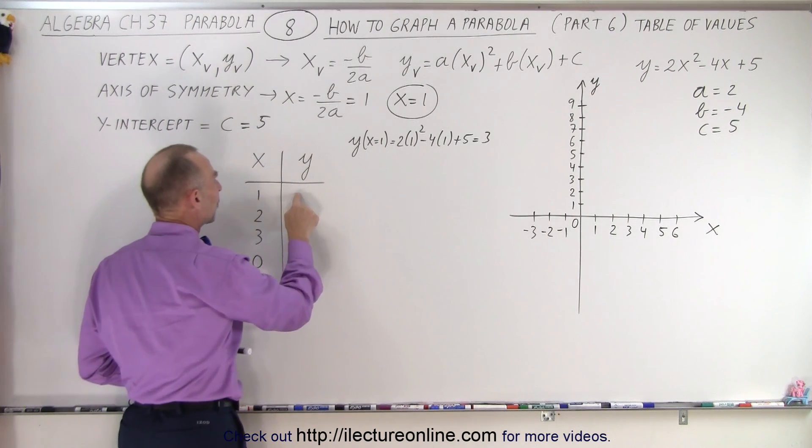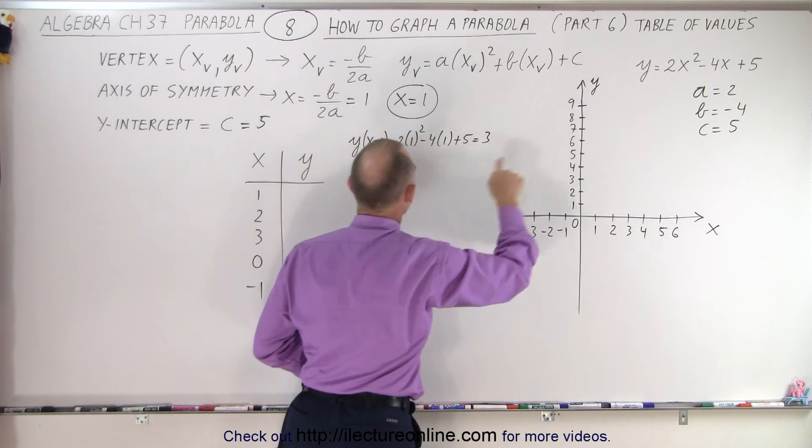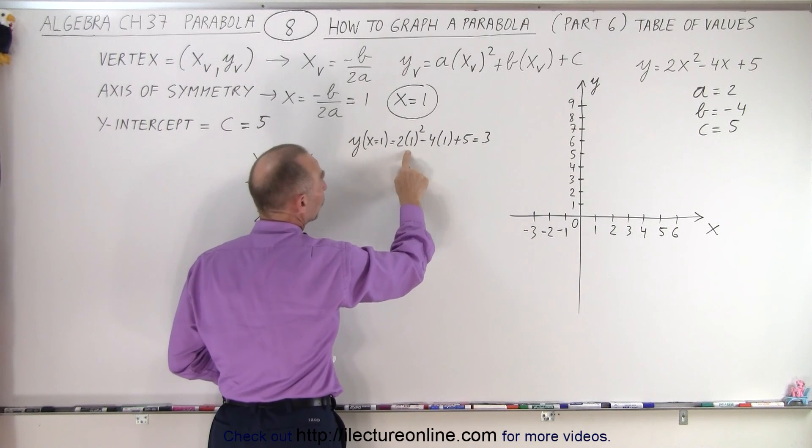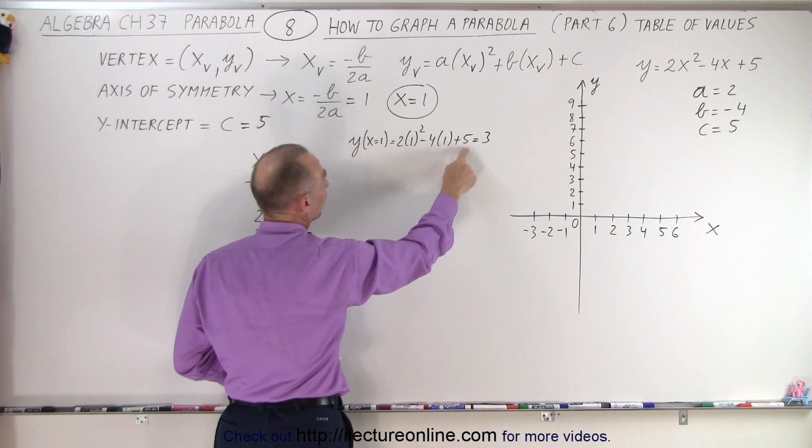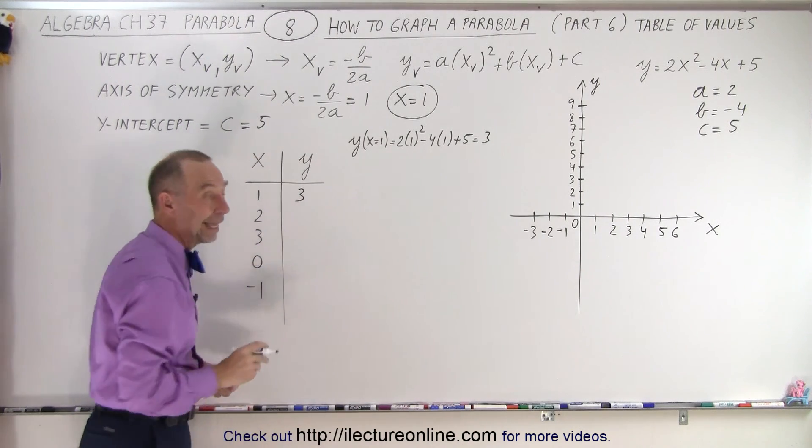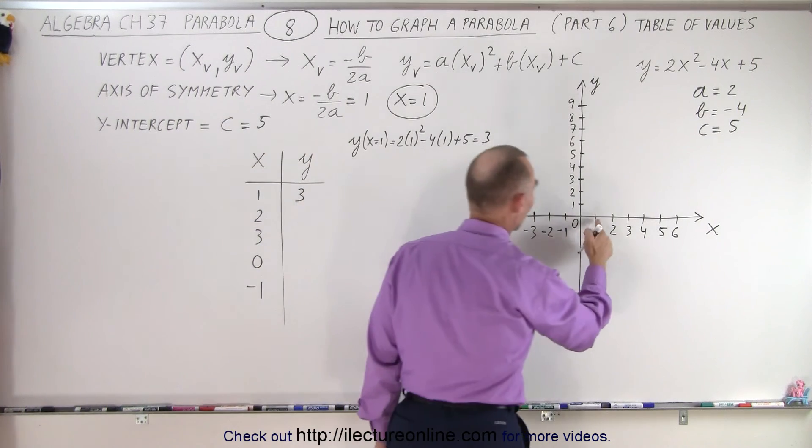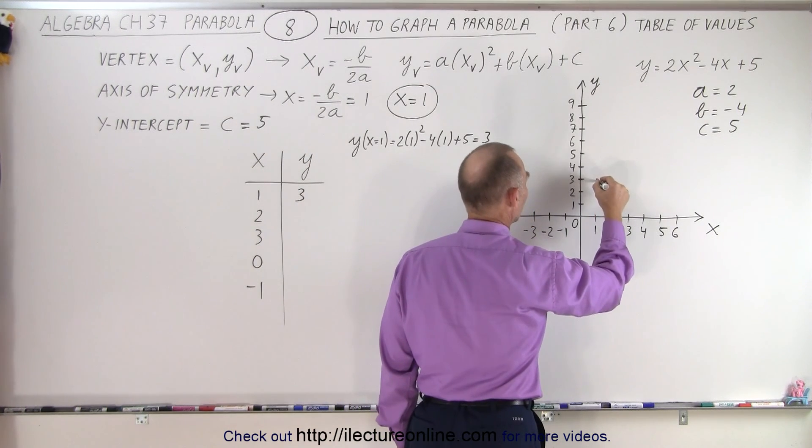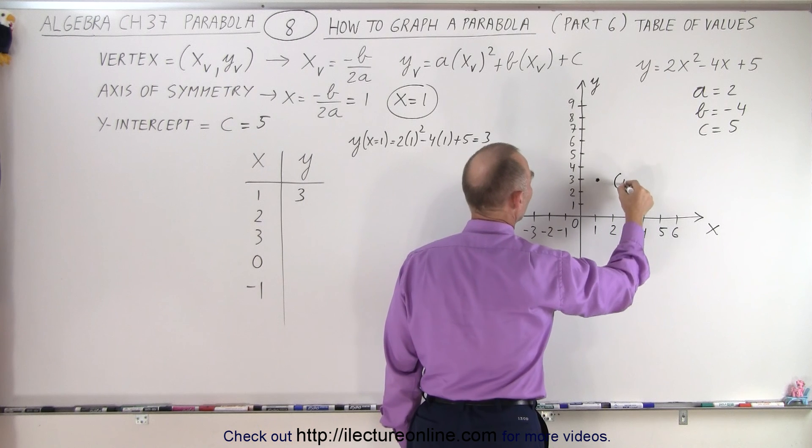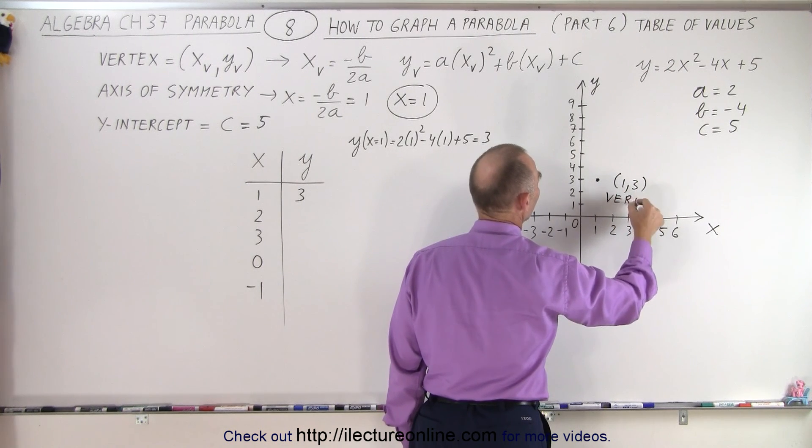To find the corresponding value for y, we plug the value x equals 1 into our equation. Notice that we have 2 times 1 squared minus 4 times 1 plus 5, which equals 3. That means we get y equals 3, and those are the coordinates of the vertex. x equals 1, y equals 3. So where the two come together, this is the vertex of the parabola.